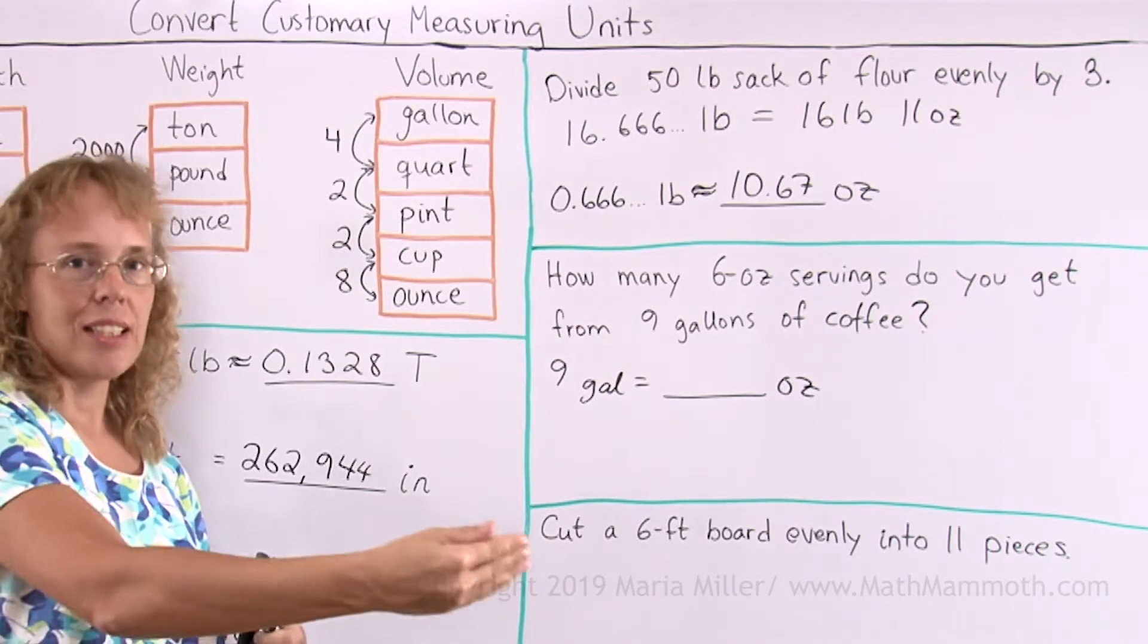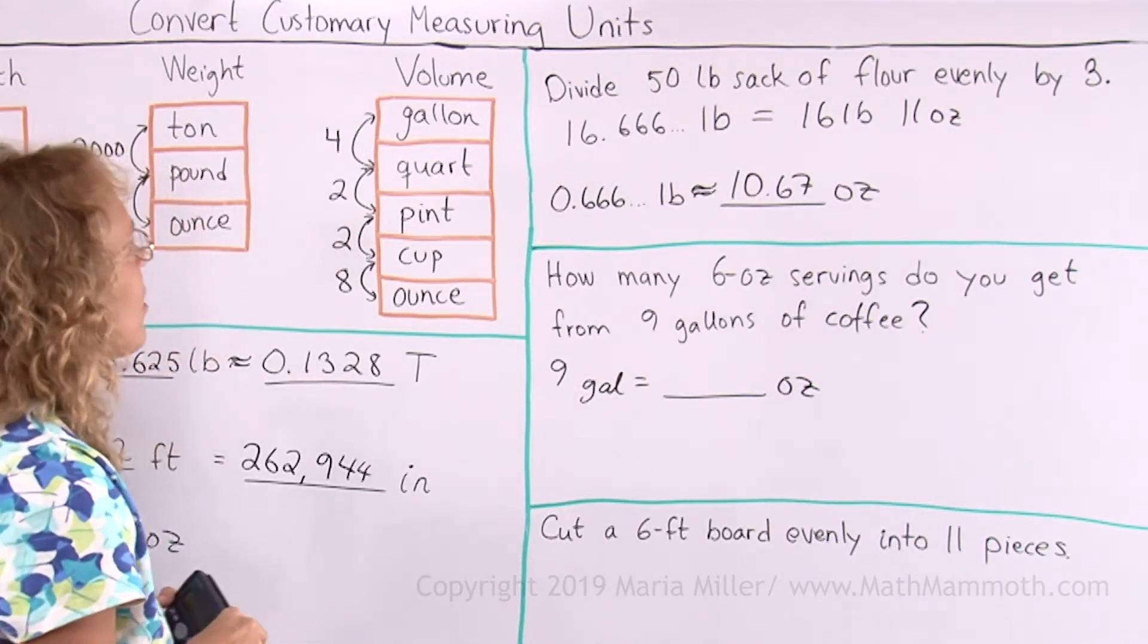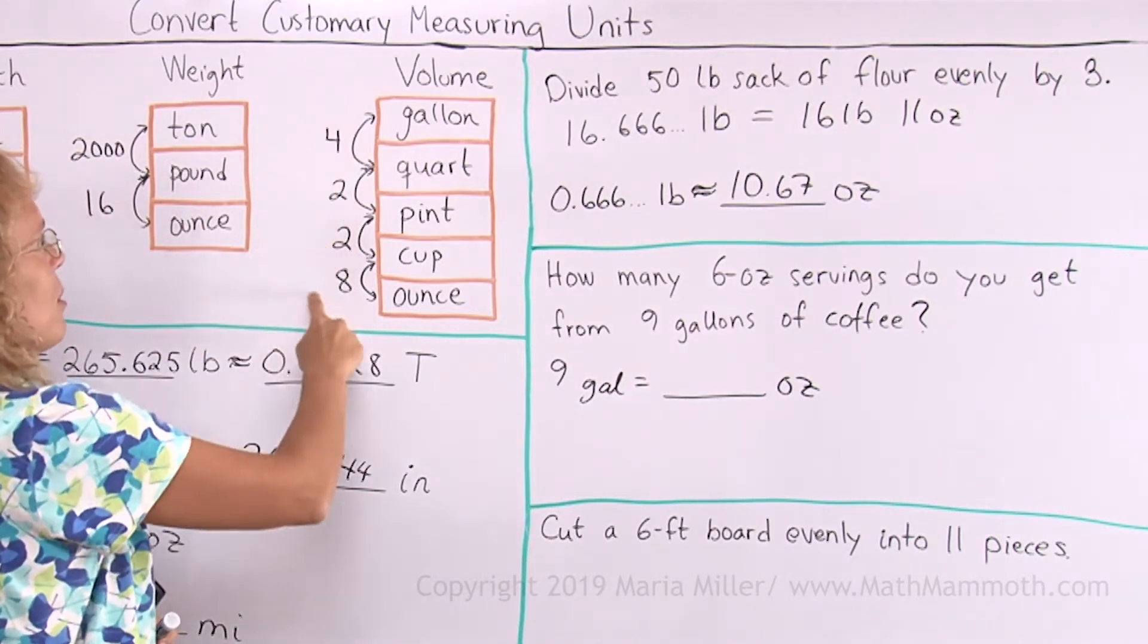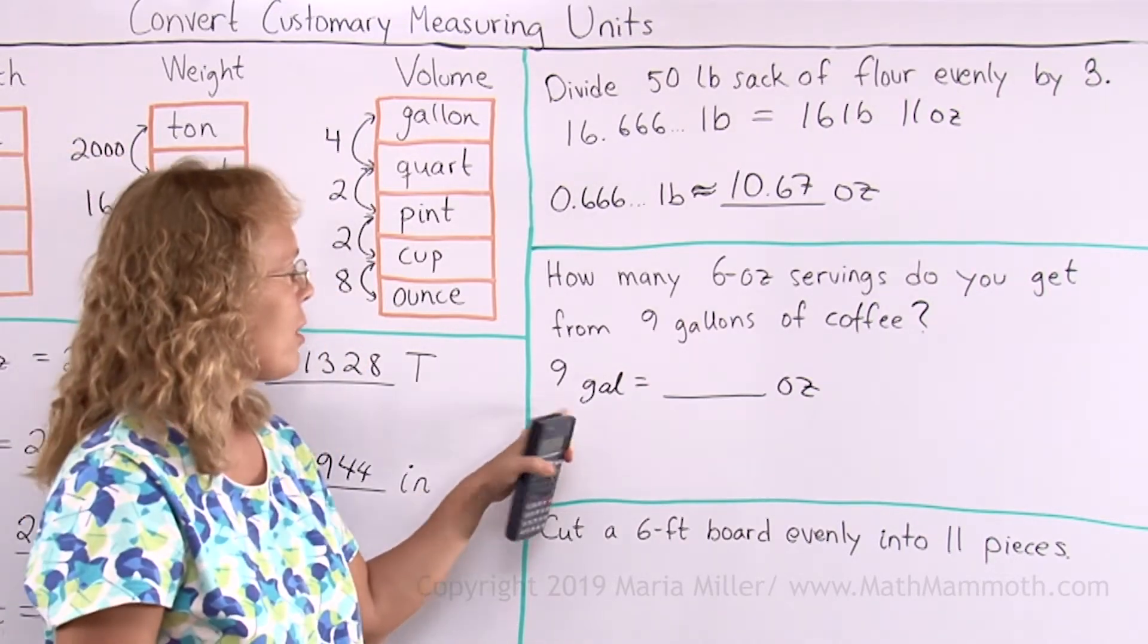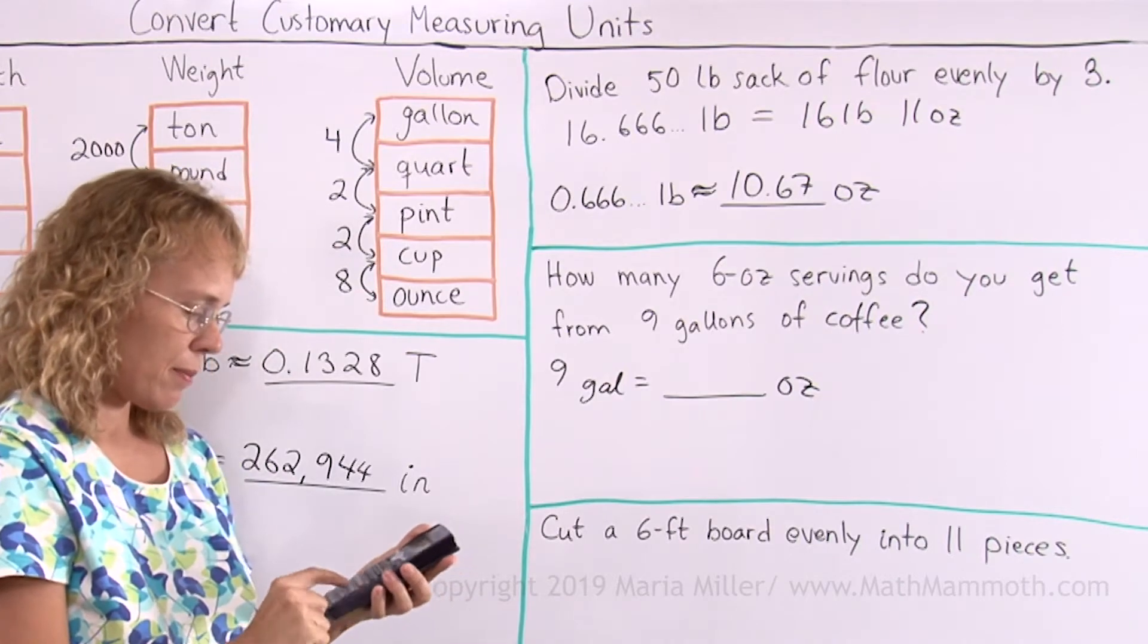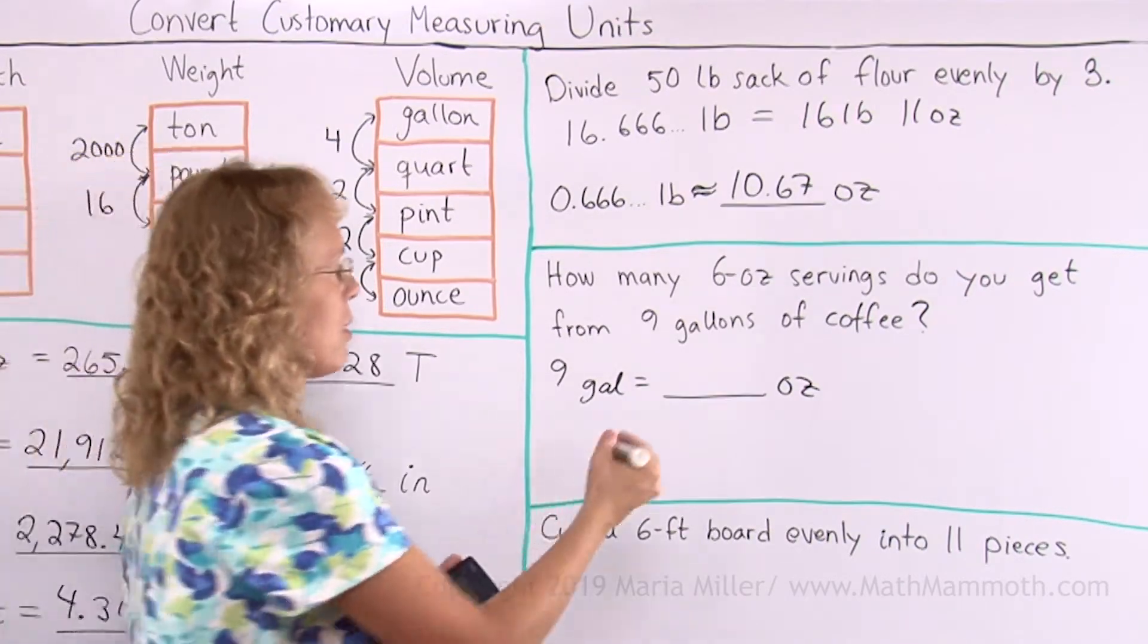Then once we get that number, then we can divide that by six to get the number of servings. Gallons to ounces. Remember that was actually 128. The conversion factor is 128. So we got this times 128 and get 1152.